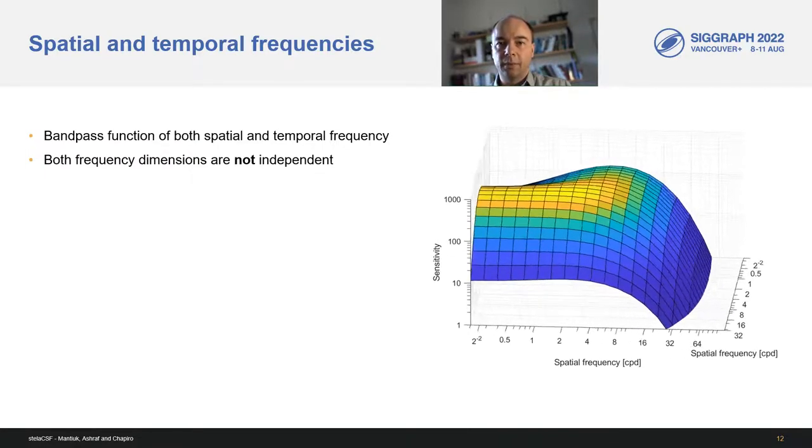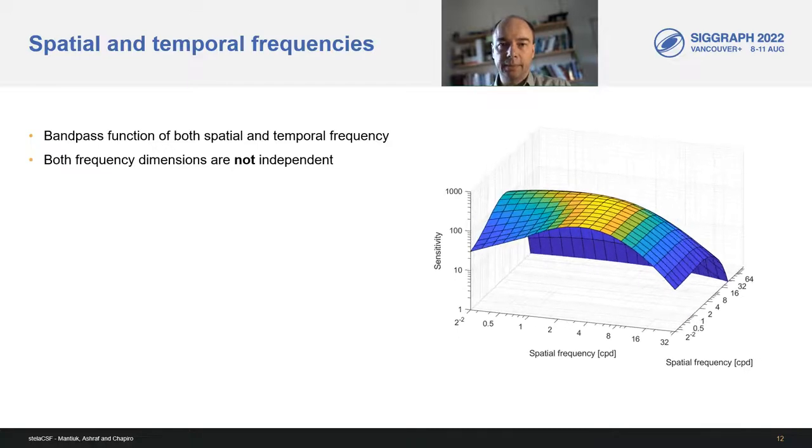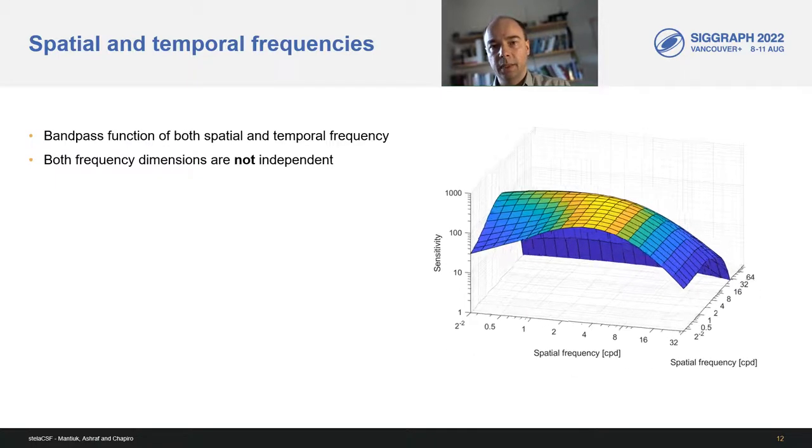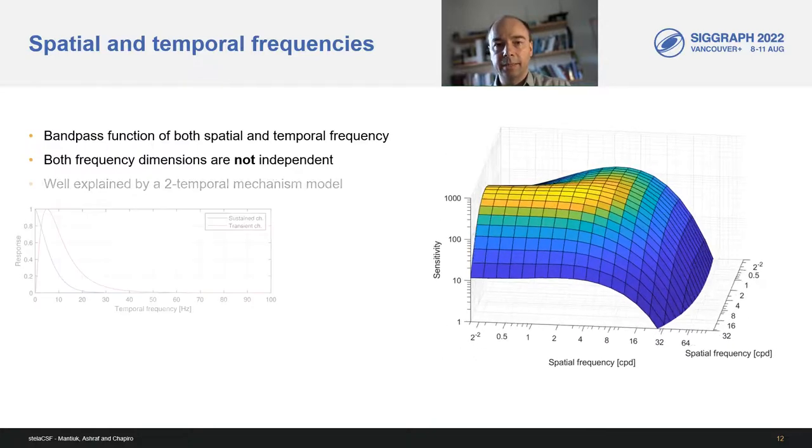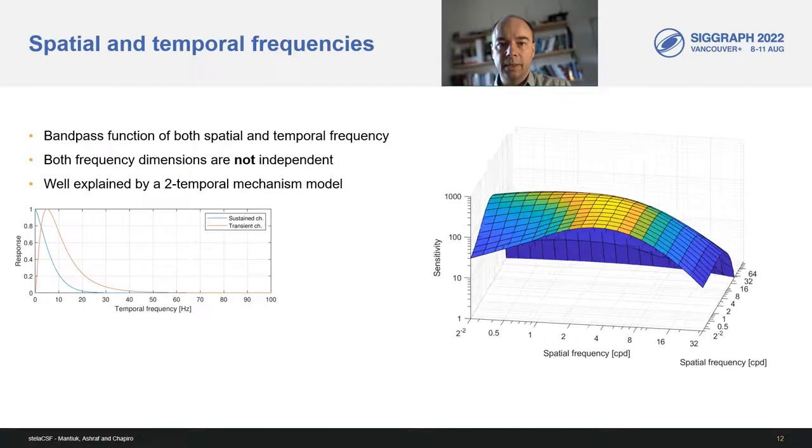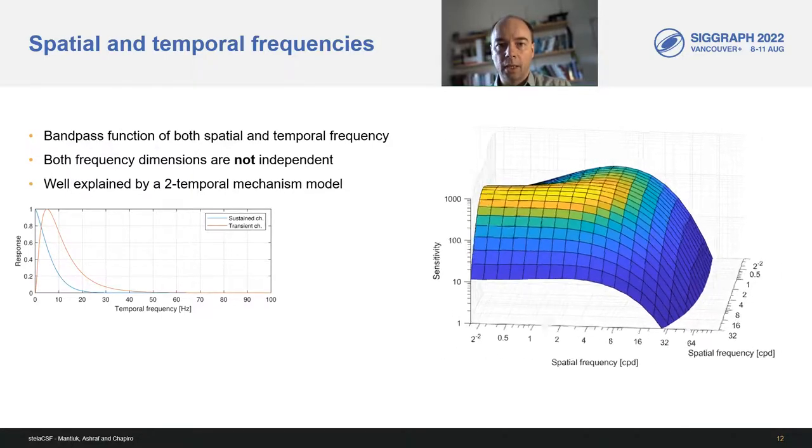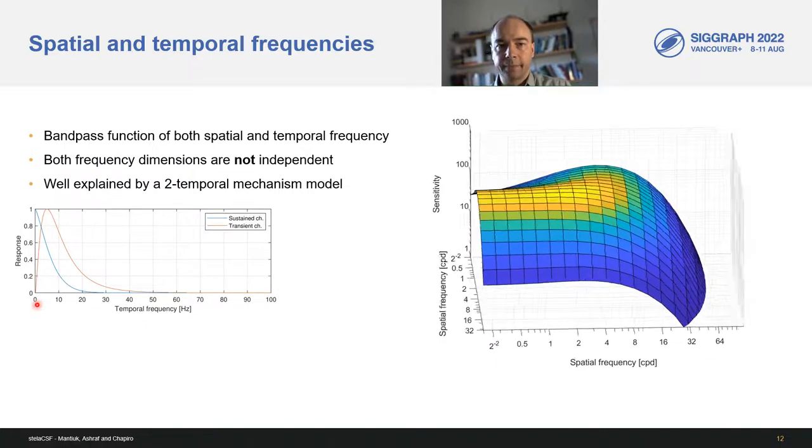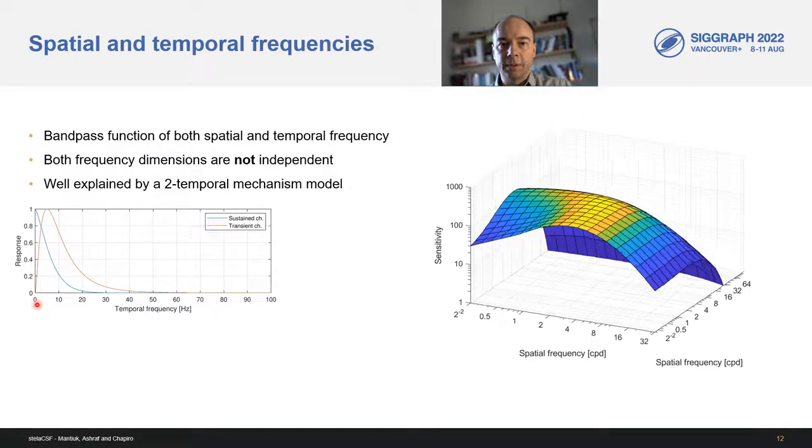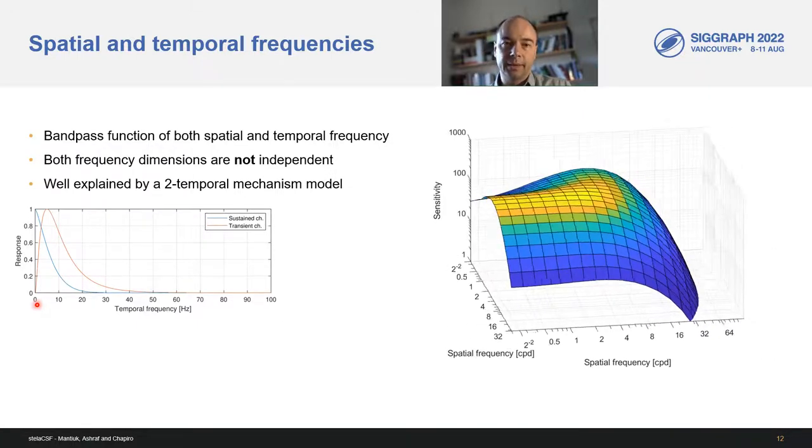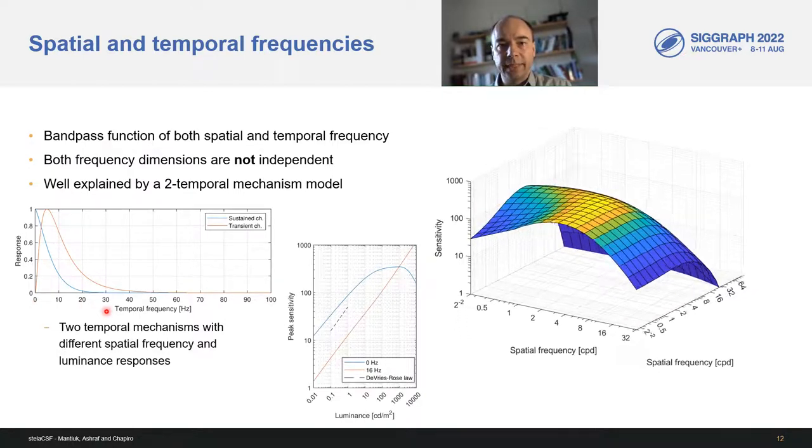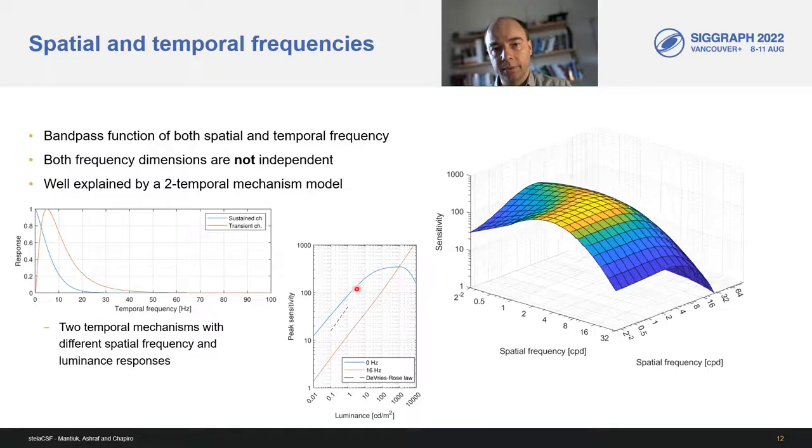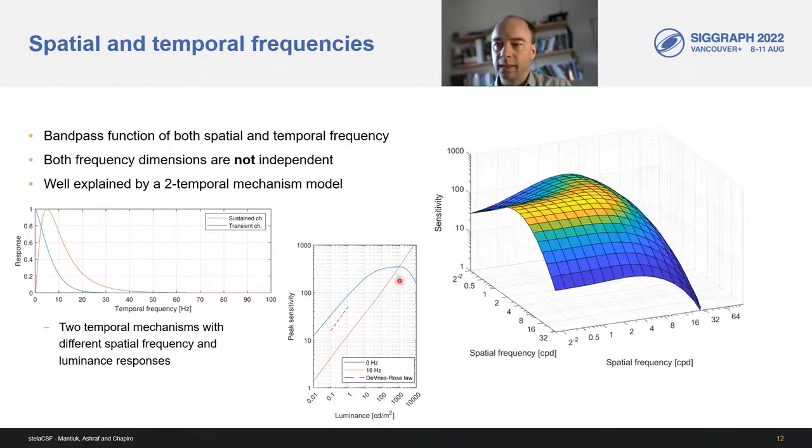CSF is a bandpass function of both spatial and temporal frequency. This is well visible in this plot. Both frequencies are not independent, so the temporal dimension cannot be modeled just by adding a term to the equation. However, it has been shown that spatiotemporal CSF can be well modeled if we assume that our visual system has two temporal mechanisms: one mechanism that is sensitive to low spatial frequencies and another that is sensitive to high temporal frequencies. If each mechanism is modeled with different spatial frequency and luminance characteristics, we can well predict existing CSF data. In this plot, we show how Stella CSF models response at 0 and 16 Hz. One mechanism shows saturation at high luminance and the other mechanism does not saturate at all.